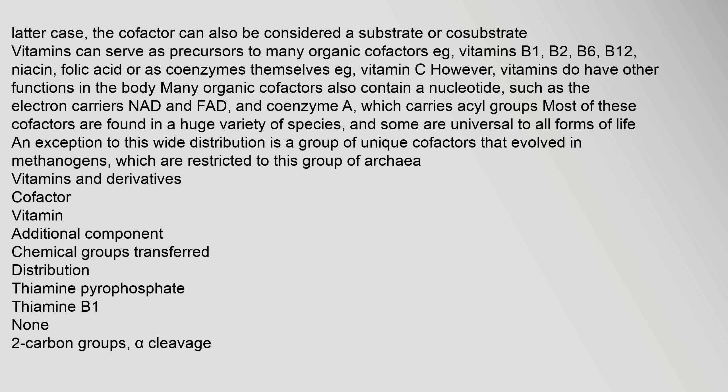Vitamins can serve as precursors to many organic cofactors, such as vitamins B1, B2, B6, B12, niacin, and folic acid, or as coenzymes themselves, such as vitamin C. Many organic cofactors also contain a nucleotide, such as the electron carriers NAD and FAD, and coenzyme A, which carries acyl groups. Most of these cofactors are found in a huge variety of species, and some are universal to all forms of life. An exception is a group of unique cofactors that evolved in methanogens, which are restricted to this group of archaea.